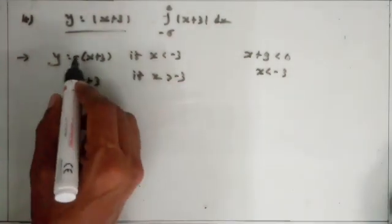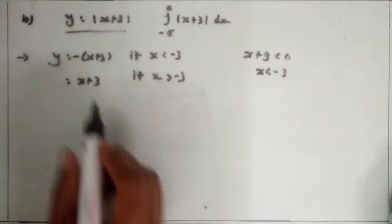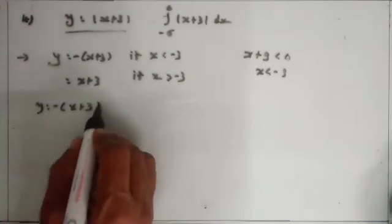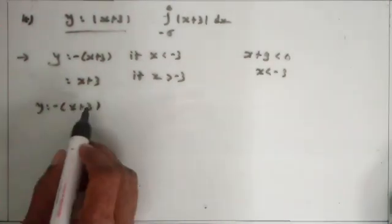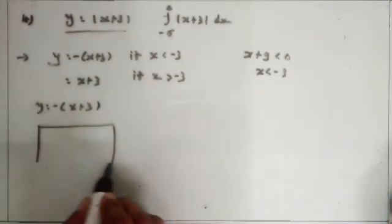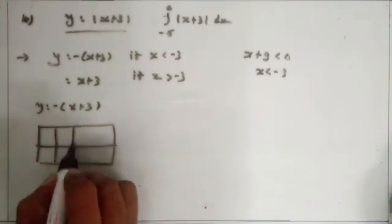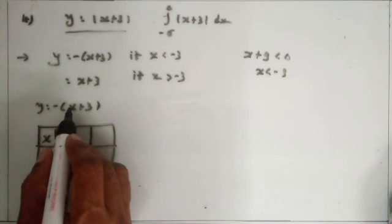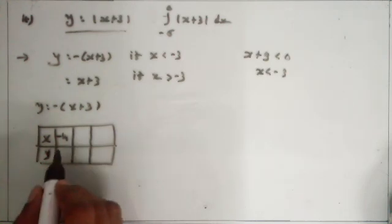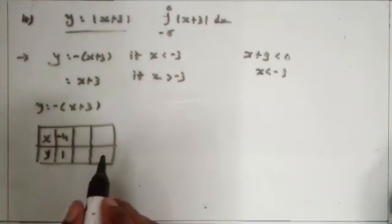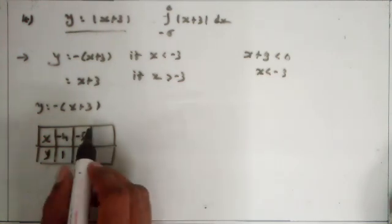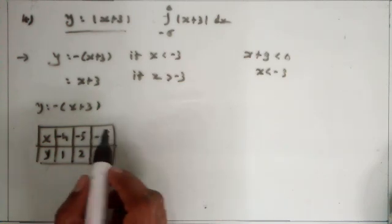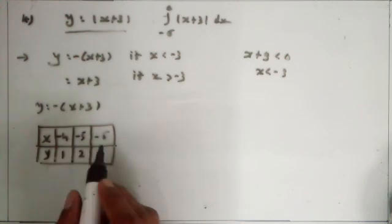Now we sketch the graph of y is equal to minus(x plus 3) and y is equal to x plus 3. Prepare a value table: for different values of x we get different values of y. x is equal to minus 4: minus 4 plus 3 becomes minus 1, and minus minus becomes plus 1, so y is equal to 1. x is equal to minus 5: minus 5 plus 3 becomes minus 2, and minus minus becomes plus 2. x is equal to minus 6: minus 6 plus 3 becomes minus 3, and minus minus becomes plus 3.